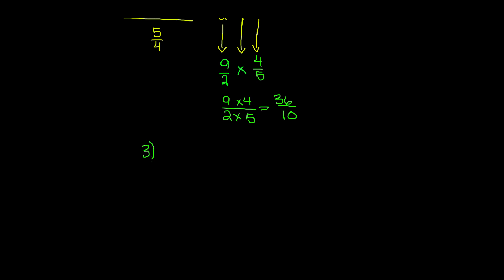Problem number three. Now instead of having only two fractions to divide, we're going to have three fractions. We have nine over four divided by one over two, divided by three over four.